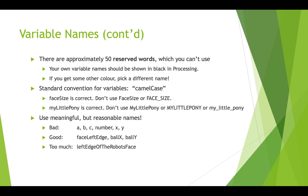When choosing variable names, pick something meaningful but also be reasonable. Names like 'a', 'b', 'c' are too vague. 'x' and 'y' are okay for screen coordinates, but it's better to give more context — like 'ballX' and 'ballY', which tell us what the coordinates refer to. 'faceLeftEdge' is a good descriptive name. But 'leftEdgeOfTheRobotsFace' goes overboard — you'll get tired of typing that every time you use the variable.